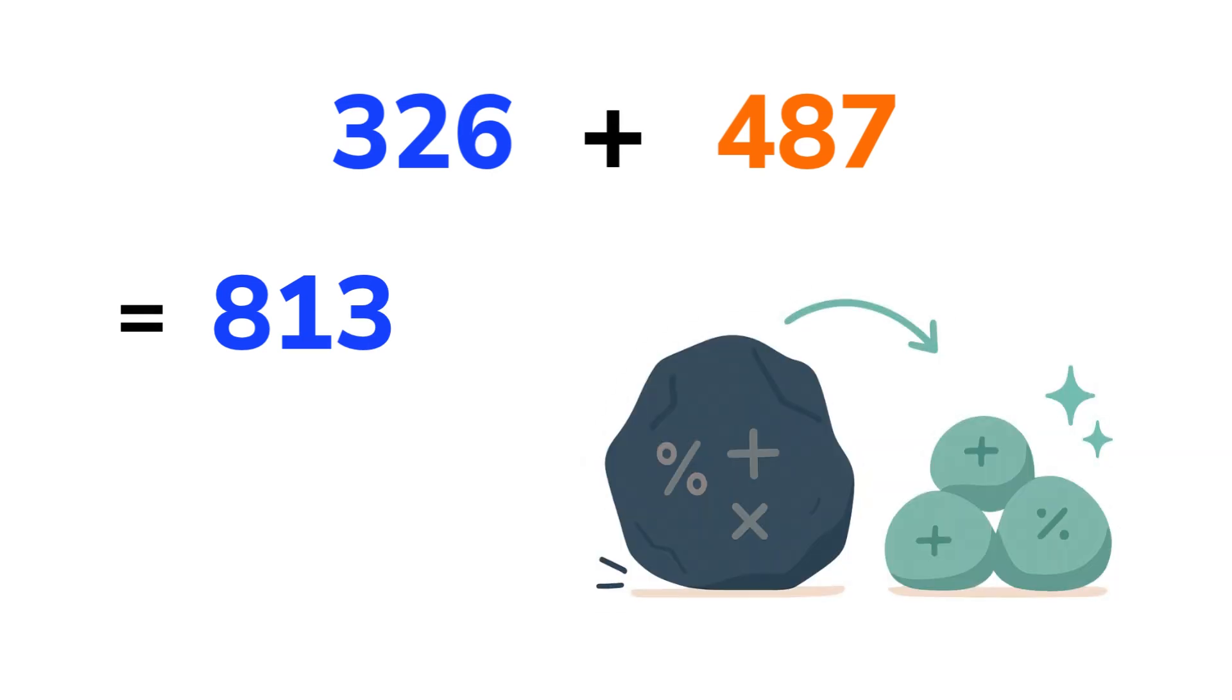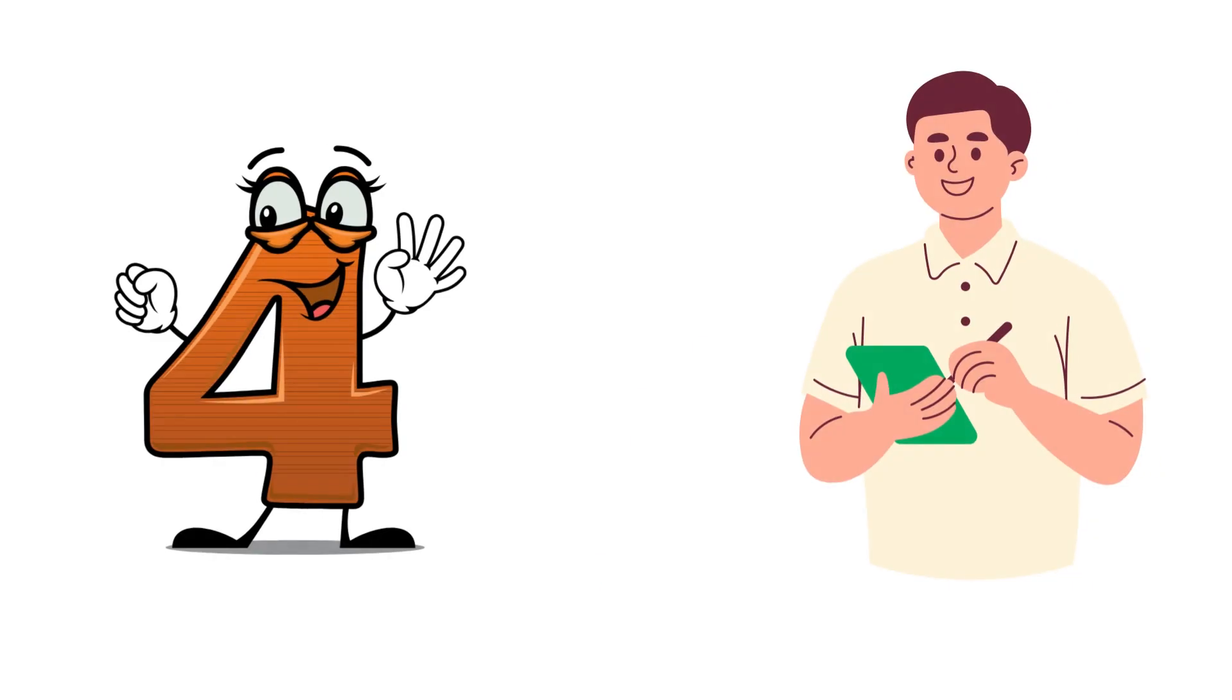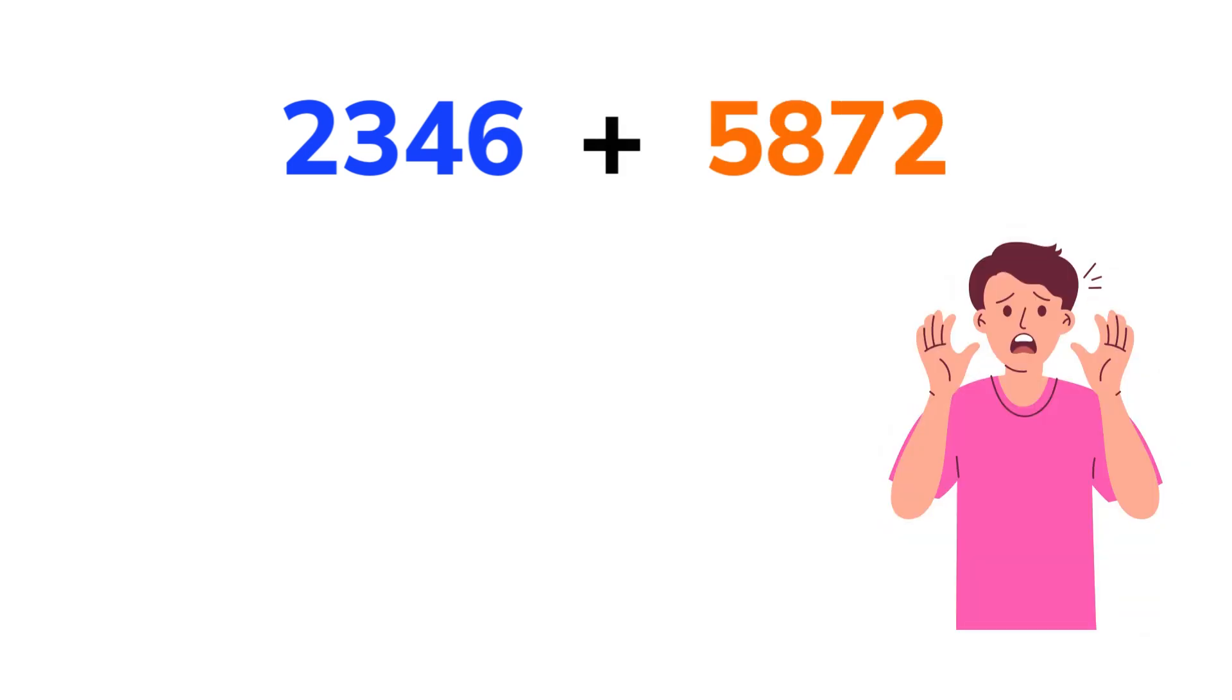Breaking it down like this makes big numbers feel small and manageable. Now let's take on some big numbers. We're going to add 2346 plus 5872. Sounds big and scary. Don't worry.